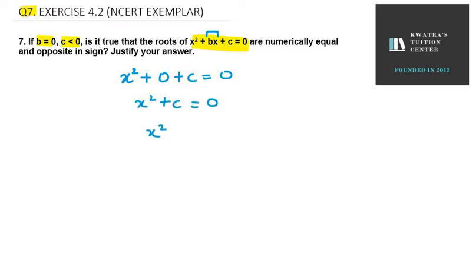We will bring c to the right hand side, so it will be minus c. Now, under root will come up, minus c. Now, they have told us that c is less than 0. This means that the value of c is negative because they have told us that it is less than 0.